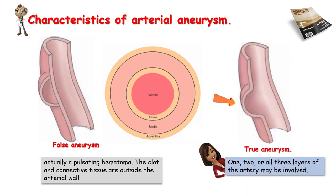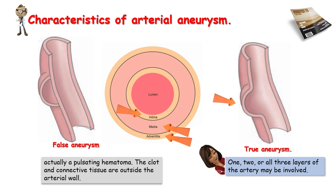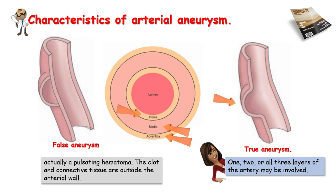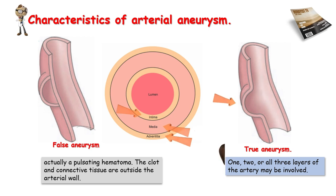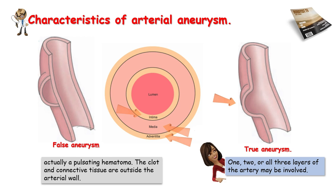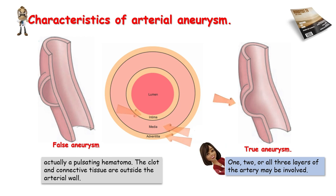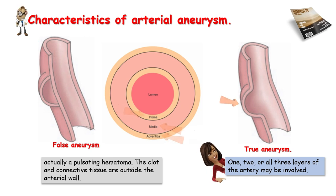A true aneurysm is a bulging or enlargement of all three layers of the wall of an artery — intima, media, and adventitia — due to a weakened artery wall. True aneurysm is most frequently a consequence of atherosclerosis. It can also be caused by hypertension, vasculitis, congenital defects, myocardial infarction, and syphilis or other factors.